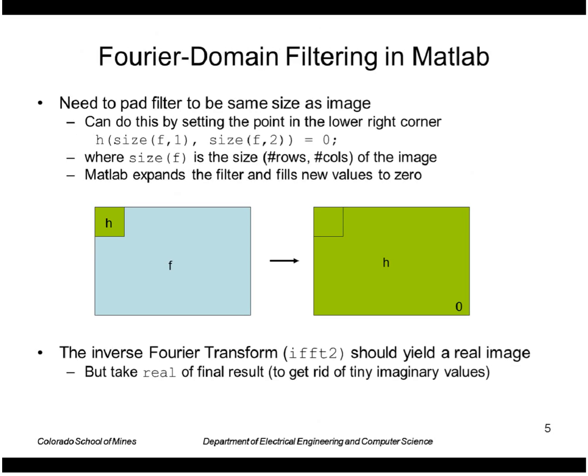Some practical notes: I said that we had to pad our filter to be the same size as our image. Basically expand it and fill all the unused values with zeros. In MATLAB you can do that by assigning the point in the lower right hand corner to be zero and MATLAB will go ahead and fill in the remaining elements with zero.